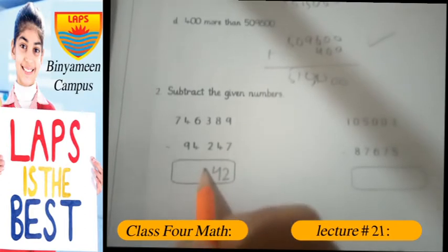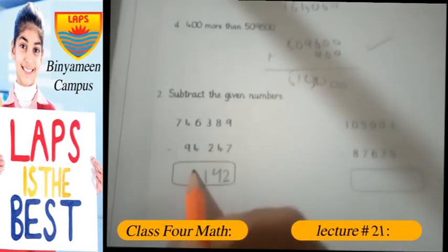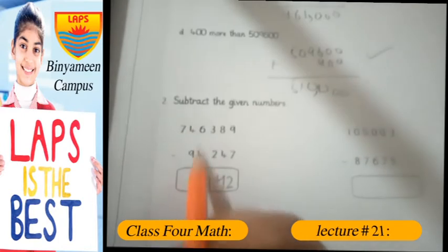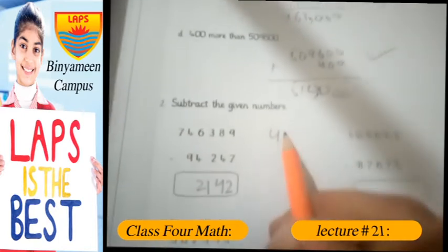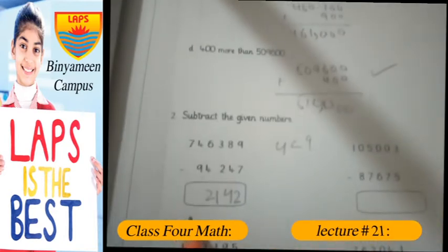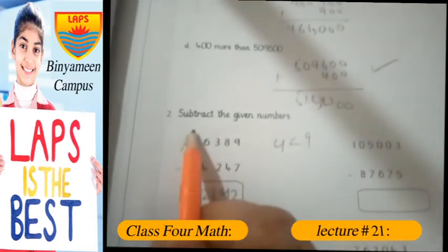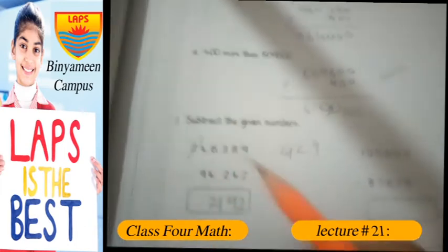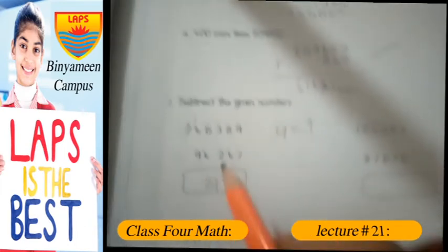Now we see that 7 is less than 9. We actually subtract 9. We have to carry from here. If we give 1 to 7, then it will be 14. If we do 14 minus 9, then the answer is 5.